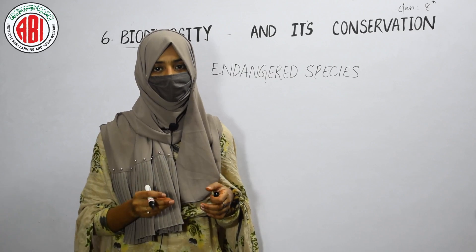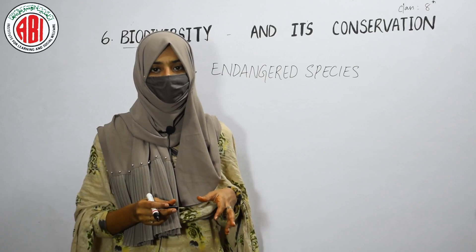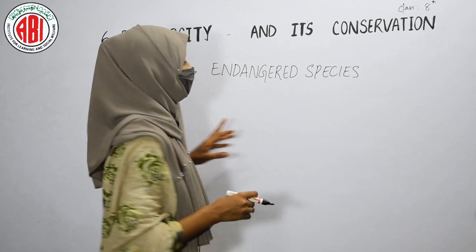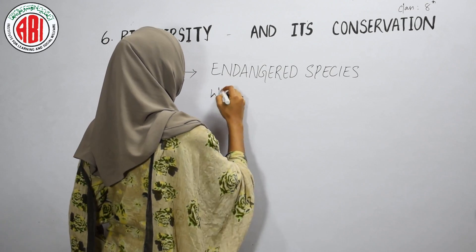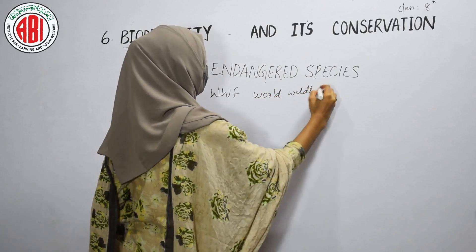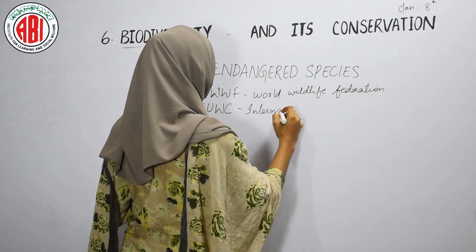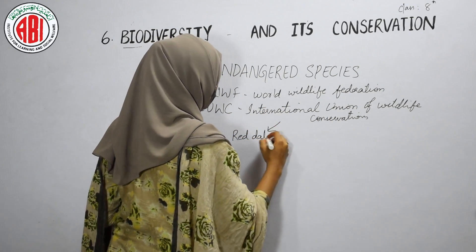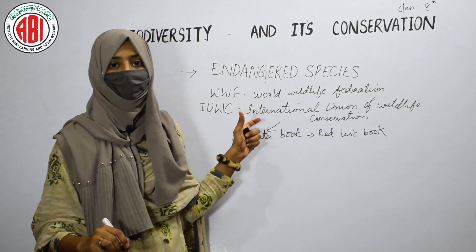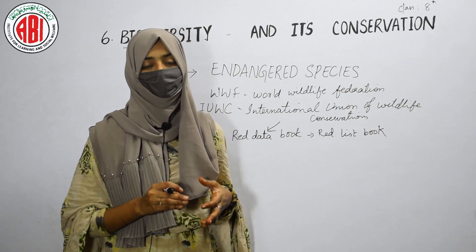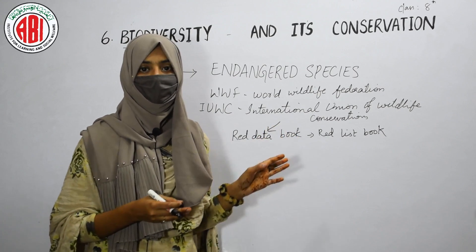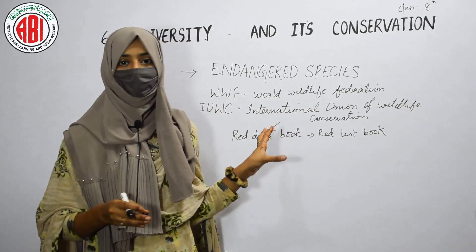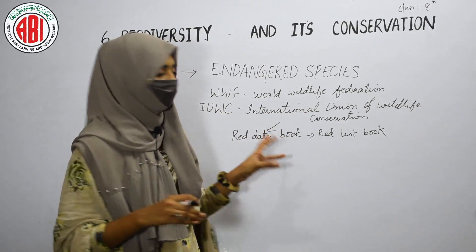Endangered species are species that are decreasing day by day from our environment — becoming less in number. Two organizations, WWF (World Wildlife Federation) and IUCN, published a book named the Red Data Book or Red List Book. In this book, they have enlisted the names of living organisms and species that are becoming endangered or extinct. Both endangered and extinct species of organisms are listed in this book.